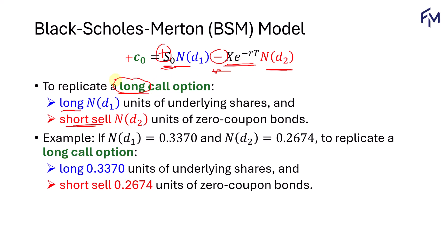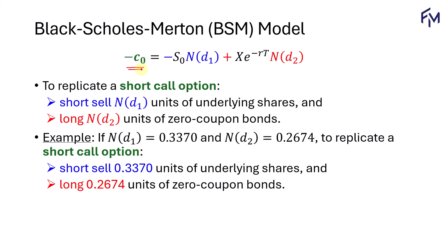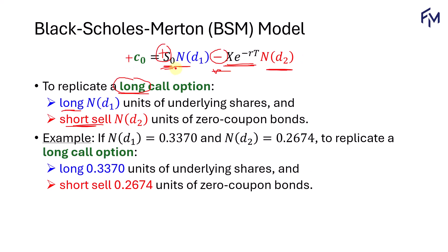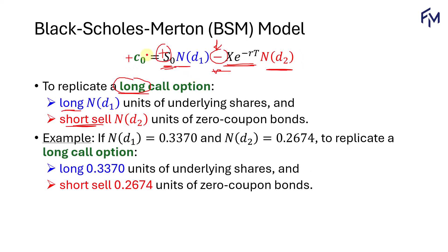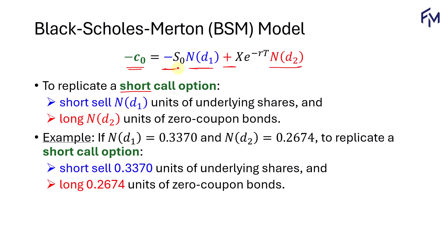Now, what if you want to replicate a short call option? We just have to multiply a negative sign on both sides. So on the right hand side, we'll have a negative underlying price multiplied by N(D sub 1) — so it now becomes negative. And the bond term, from negative, becomes positive. To replicate a short call option, we will short sell N(D sub 1) units of the underlying shares, and we will long N(D sub 2) units of the zero coupon bonds. You just have to remember the formula for the long call option, and short call is just multiplying a negative sign on both sides.